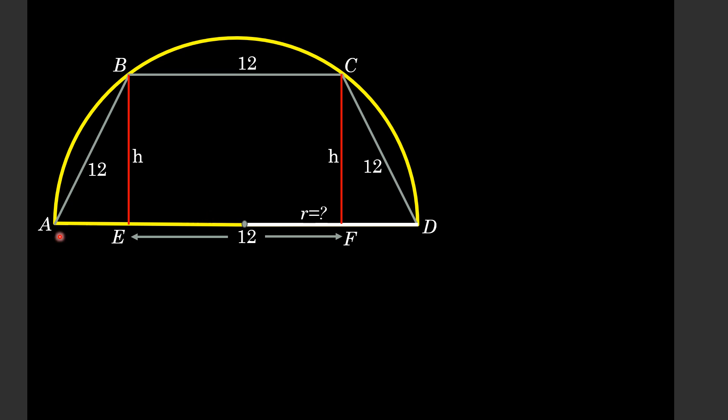Now, from triangle ABE and DCF, these two triangles are identical. So, AE length, this AE length is equal to FD length, and let we call this length equal to x.